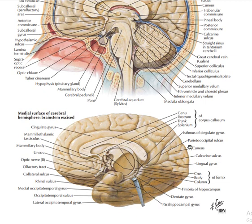In between the parieto-occipital sulcus and the calcarine sulcus, we have this part of the occipital lobe called the cuneus. At the lower portion of the calcarine sulcus we have the lingual gyrus. At this portion here we have the temporal lobe, seen from medially and not laterally. The medial occipitotemporal gyrus and the lateral occipitotemporal gyrus are both visible from this medial view.